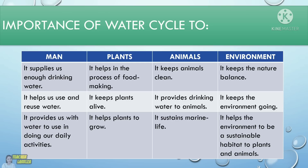Your answers may vary, but here are some examples of the importance of the water cycle. To man: it supplies us enough drinking water, helps us use and reuse water, and provides water for our daily activities. For plants: water cycle helps in the process of food making, keeps plants alive, and helps plants grow. For animals: water cycle keeps them clean, provides drinking water, and sustains marine life. And for our environment: water cycle keeps nature balanced, keeps the environment going, and helps the environment be a sustainable habitat for plants and animals.